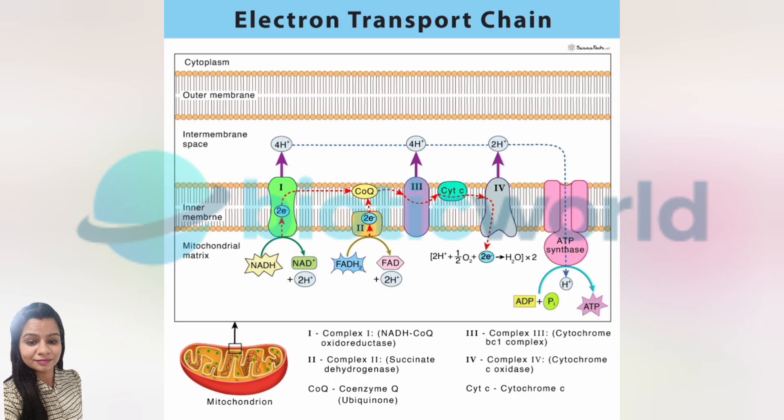Here, the electrons are transferred to cytochrome C, a small protein in the intermembrane space, and more protons are pumped across the membrane. The final step happens at Complex 4, also called cytochrome C oxidase. This complex receives electrons from cytochrome C and transfers them to oxygen, the terminal electron acceptor. Oxygen combines with protons to form water.